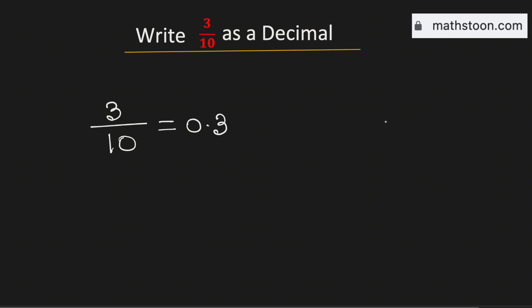Now let's verify this using the division method. We know that 10 cannot go into 3, so we need to put a decimal here so that we can bring 0.